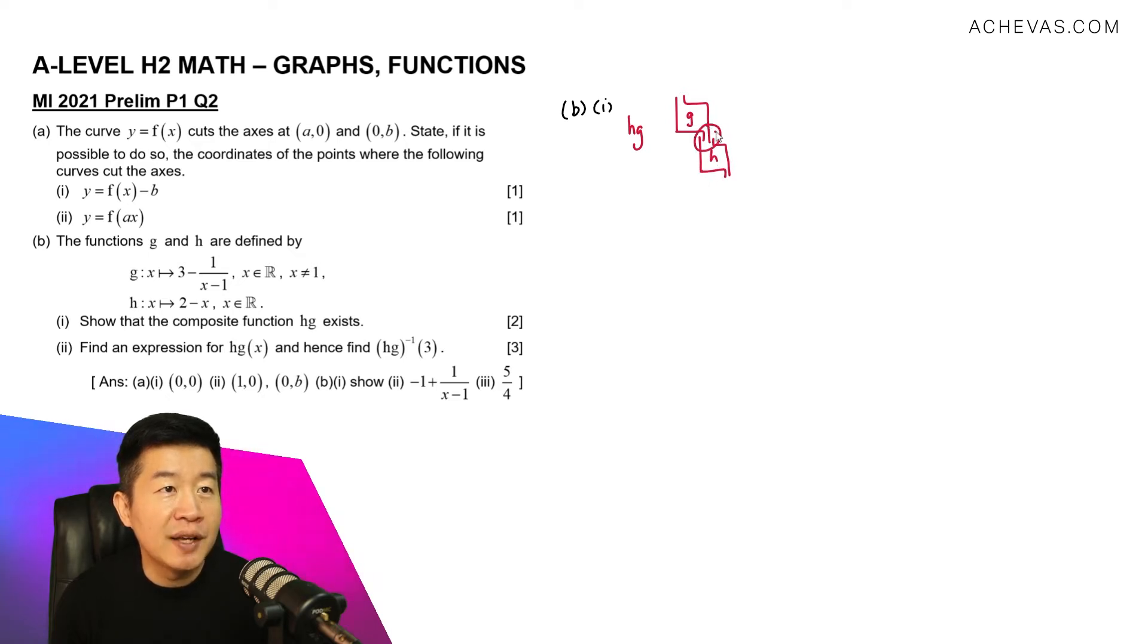So in order for hG to exist, we are analyzing the part where they are being connected together. And I just want to make sure that everything that comes out from g, which is represented by the range of g, they must go into, entirely go into what h can receive, which is going to be represented by the domain of h.